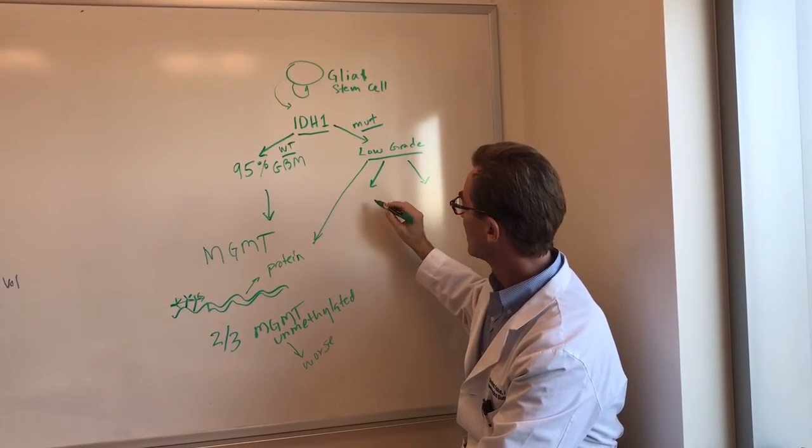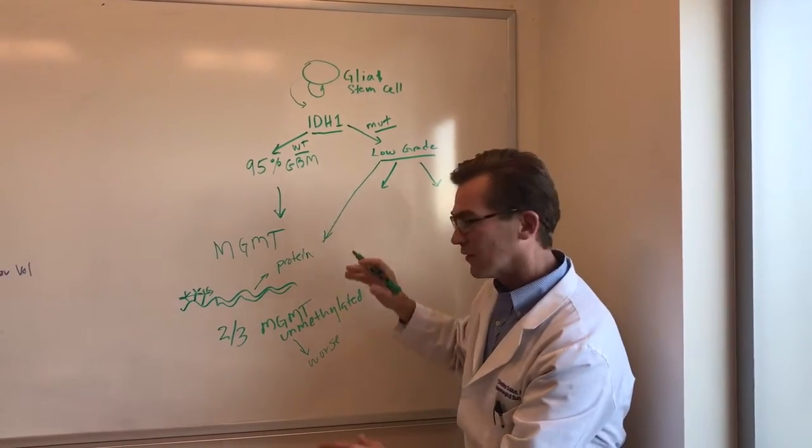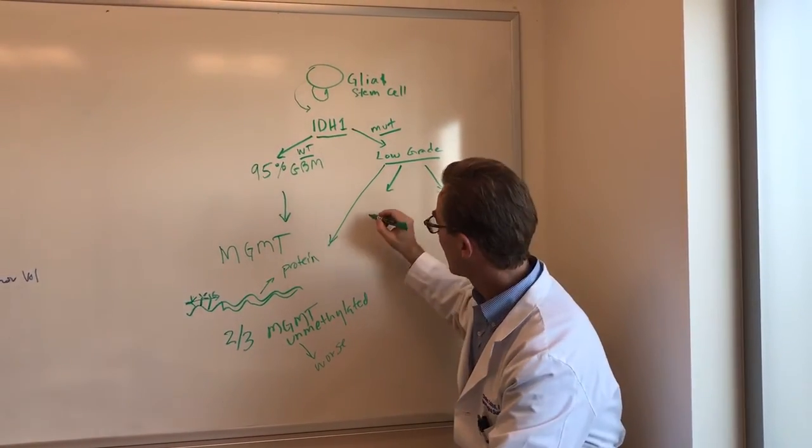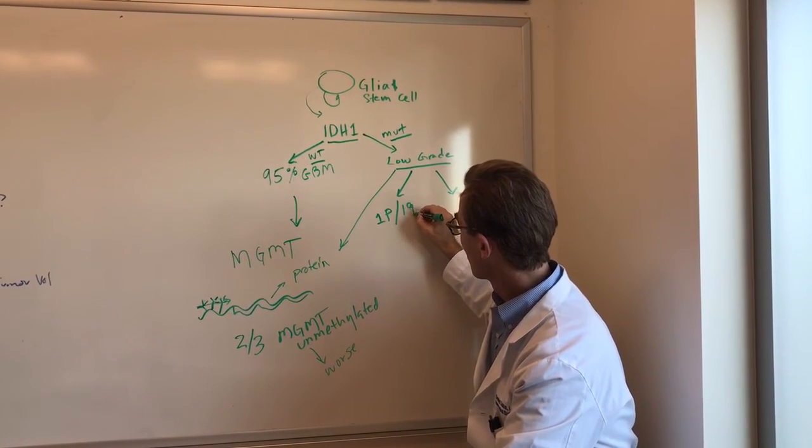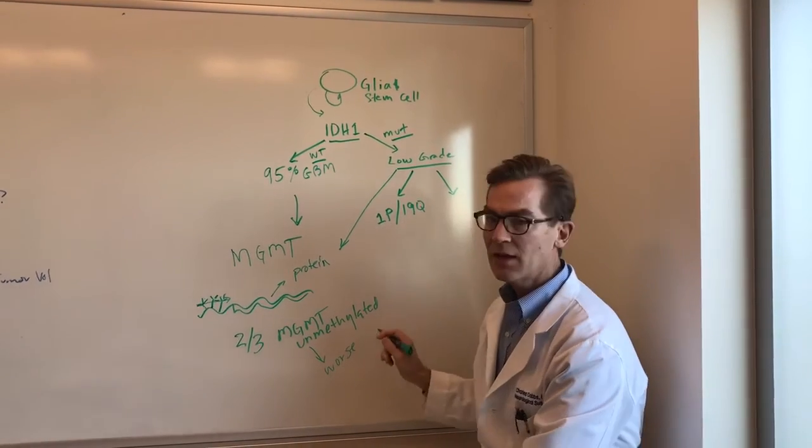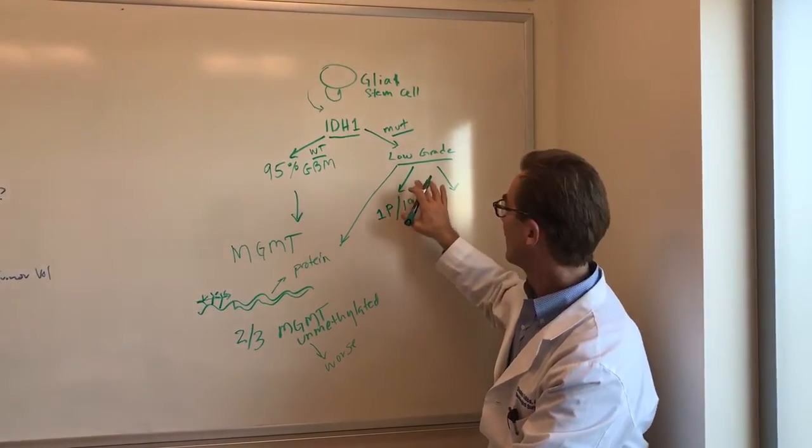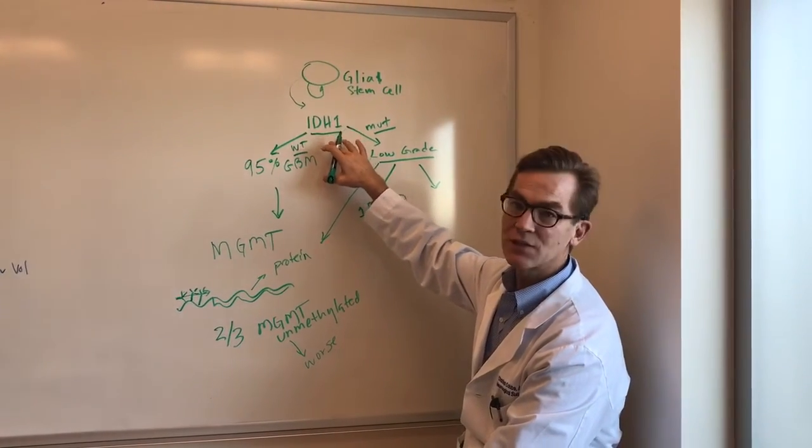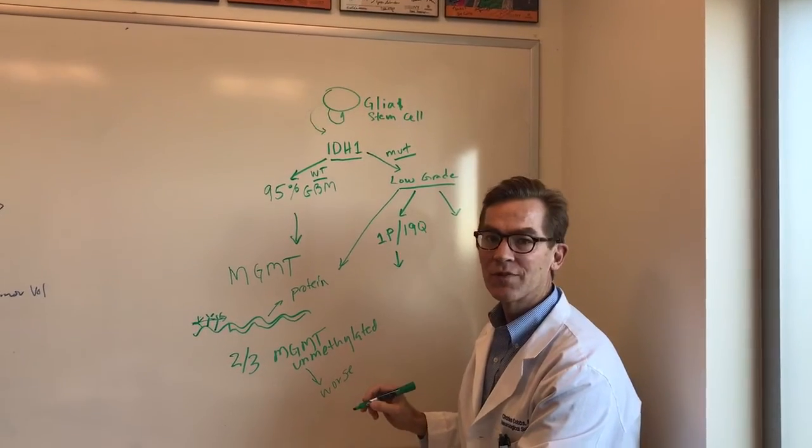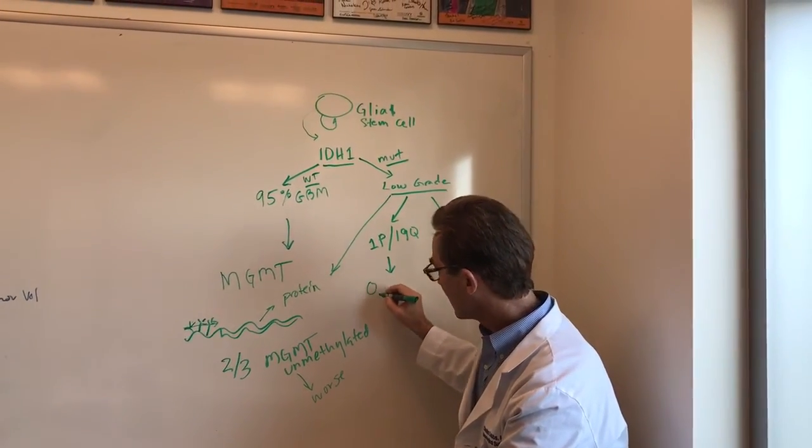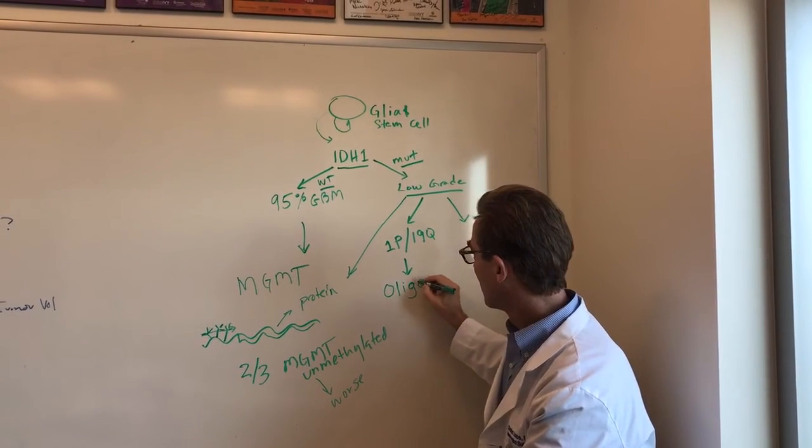And then of all of those, there are some that have a deletion of two genes called 1P and 19Q. So a 1P and 19Q deletion in a tumor that has an IDH1 mutation essentially describes an oligodendroglioma.